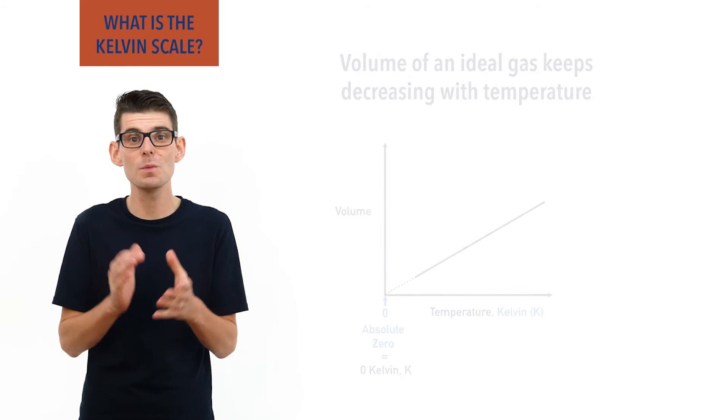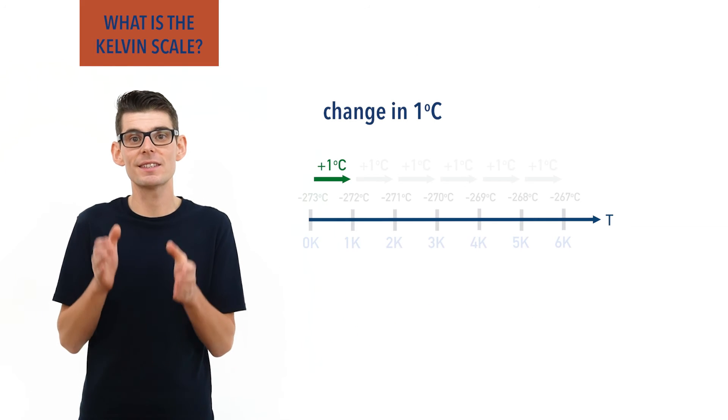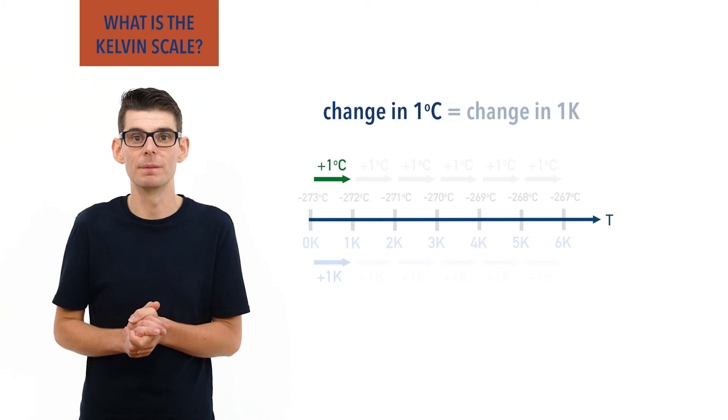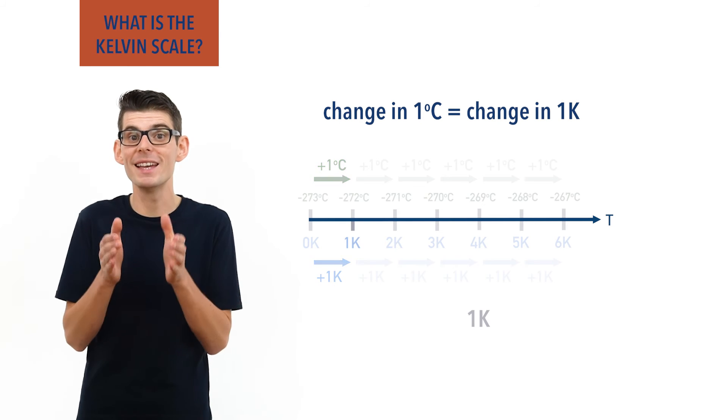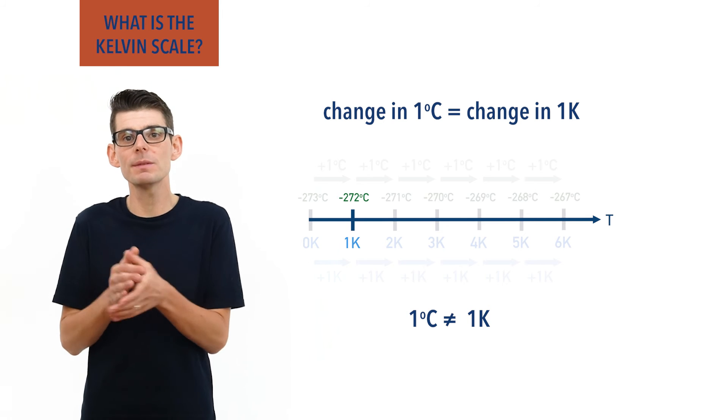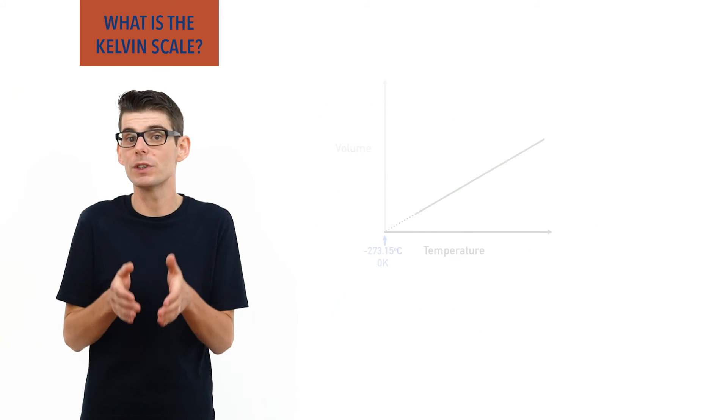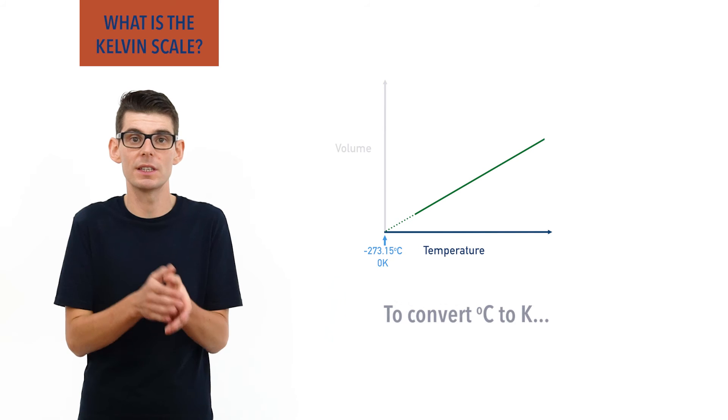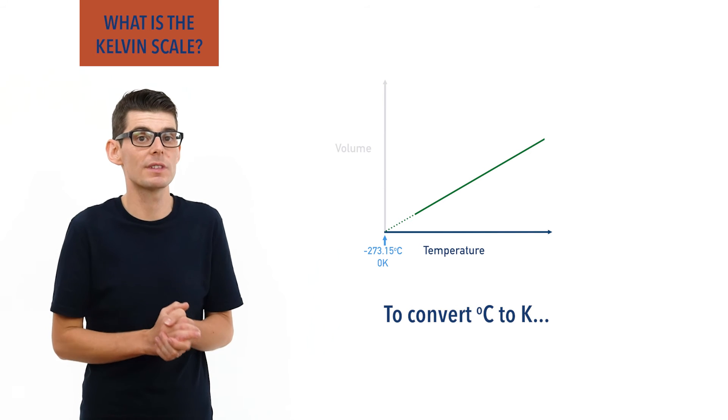Usefully a change in one degree Celsius is the same as a change in one Kelvin. One Kelvin however isn't the same as one degree Celsius. From its starting point on the graph we can see that to convert between degrees Celsius and Kelvin add 273.